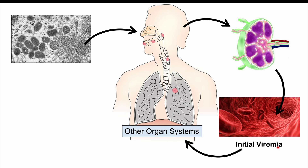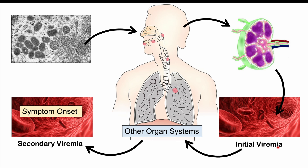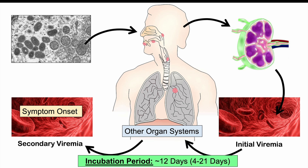After the initial viremia, the virus enters other organ systems via the blood, stays there, and then leaves to re-enter the blood in what we call secondary viremia — this is when symptom onset occurs. The time from initial infection through the lymph nodes, initial viremia, organ systems, and secondary viremia constitutes the incubation period, which ranges from four to 21 days, with most cases averaging around 12 days.